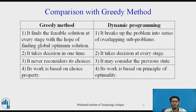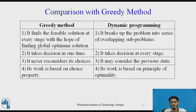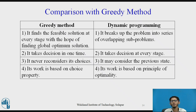Comparing with the greedy method: the greedy method finds a feasible solution at every stage hoping for a global optimum, whereas dynamic programming breaks the problem into overlapping sub-problems. Greedy takes decisions once and never reconsiders choices, while dynamic programming takes decisions at every stage and may consider previous states. Greedy is based on choice property; dynamic programming is based on the principle of optimality.